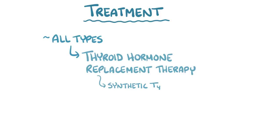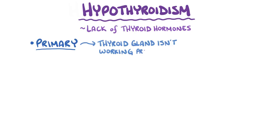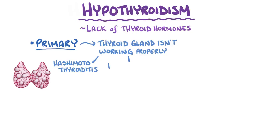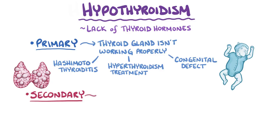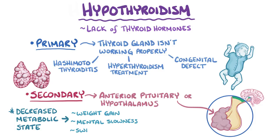As a quick recap: hypothyroidism refers to a condition where there's a lack of thyroid hormones. In primary hypothyroidism, the thyroid gland isn't working properly, as a result of an autoimmune disease like Hashimoto thyroiditis, hyperthyroidism treatment, or a congenital defect. In secondary hypothyroidism, either the anterior pituitary gland or the hypothalamus is the problem, usually because of a tumor or damage from surgery. In all cases, the lack of thyroid hormones can cause a decreased metabolic state, with symptoms like weight gain, mental slowness, swelling of the skin and soft tissues, and a slower heart rate.